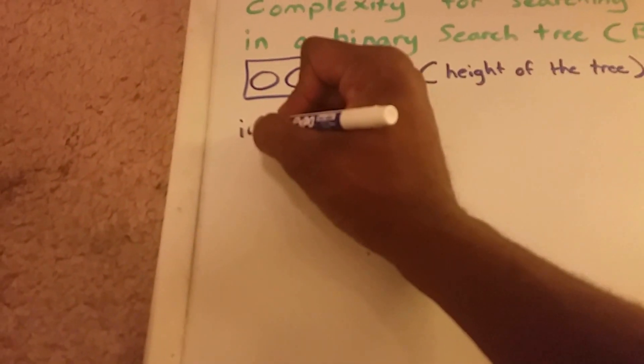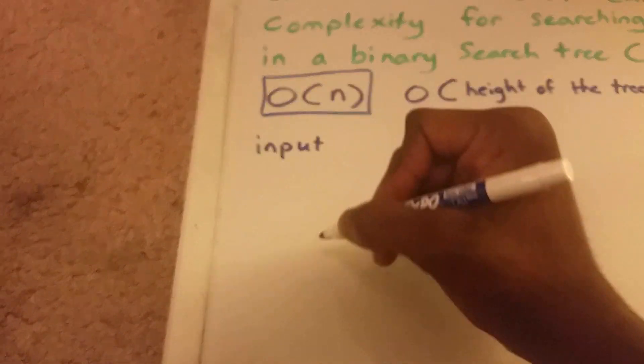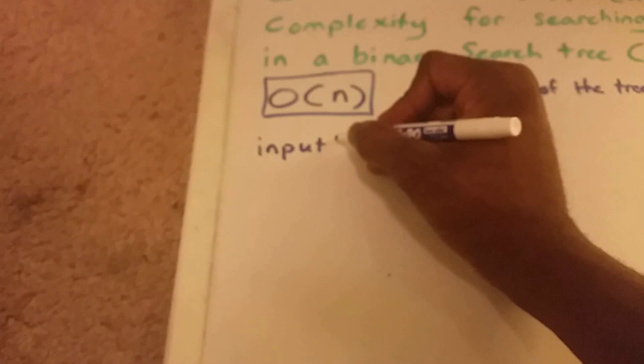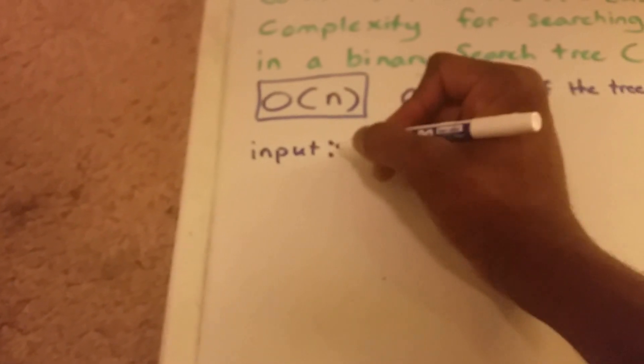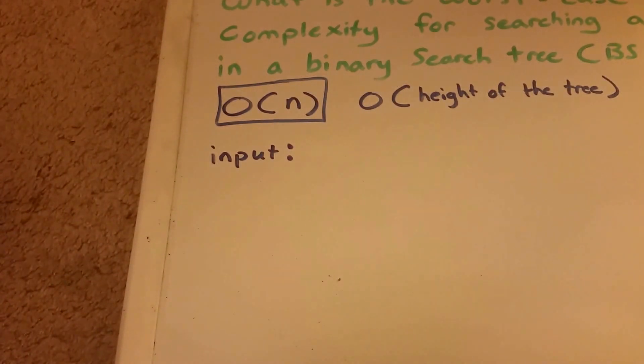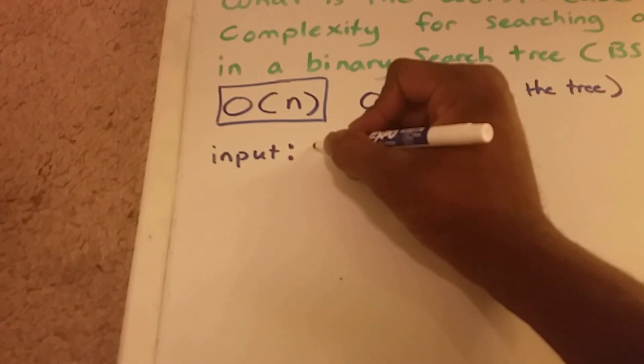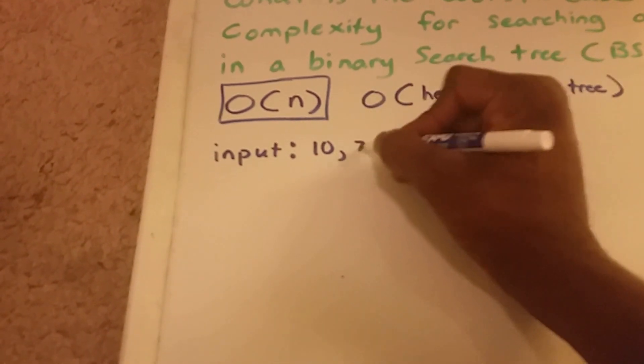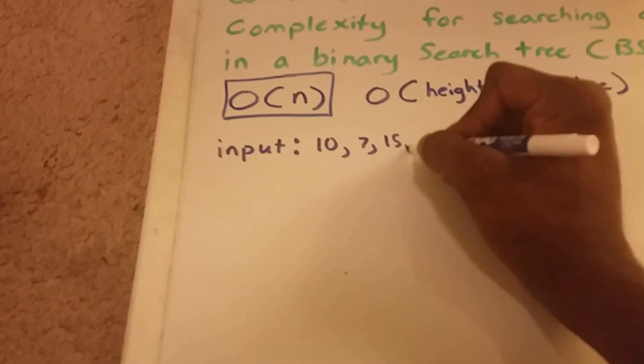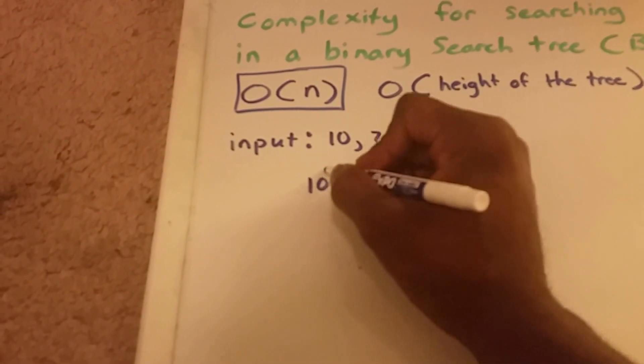Now, the binary search tree's structure changes depending on the order of the input. So let's say I have some input: 10, 7, 15, and 13. I'm going to put this in the binary search tree so you can see the structure.